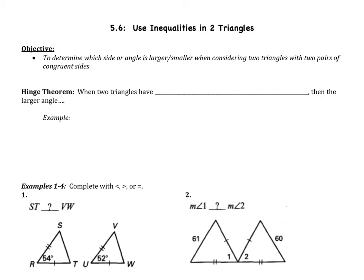Welcome to the 5.6 video, the last video for chapter 5, which is on using inequalities in two triangles. This section is very closely related to the last section. The last section used two different inequality ideas: the smallest side in a triangle is located across from the smallest angle, and the largest side is located across from the largest angle.